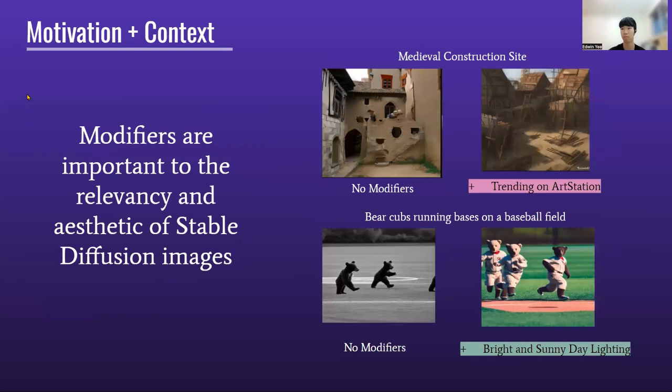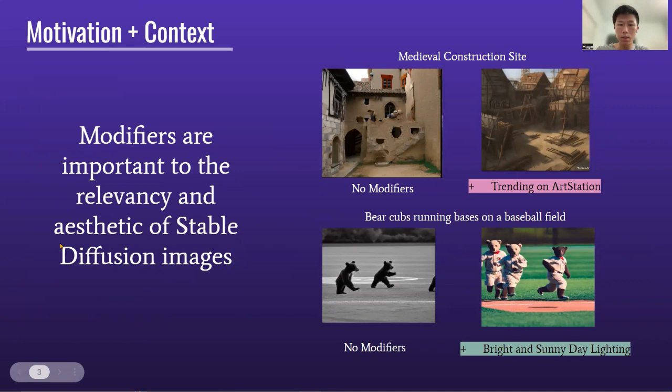Here, we have four images generated by Stable Diffusion. The images on the left are generated from prompts without specific modifiers added. By adding 'trending on ArtStation' and 'bright and sunny day' lighting to these prompts, their relevancy and aesthetic improves.